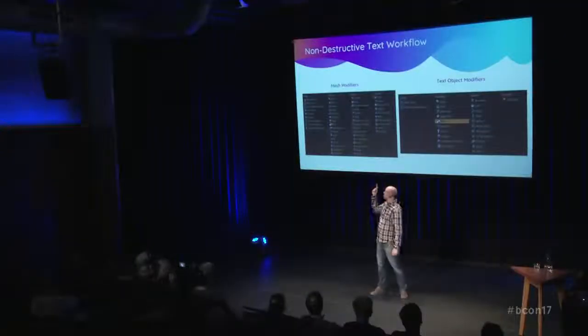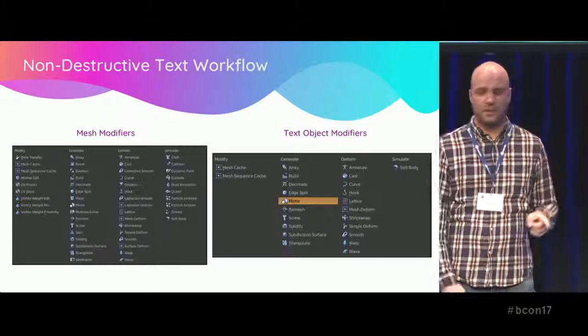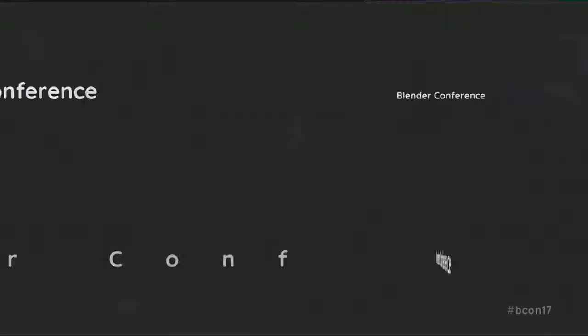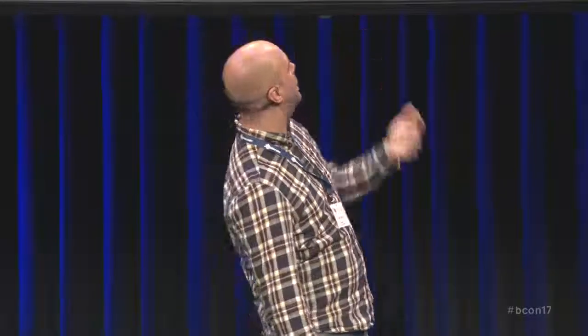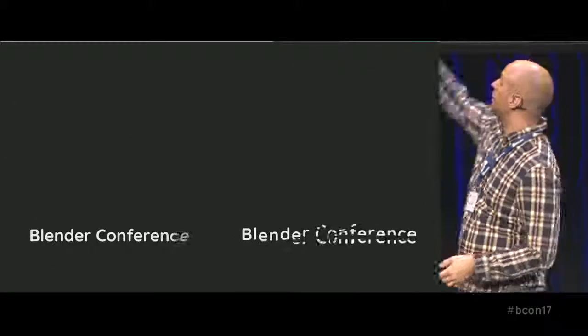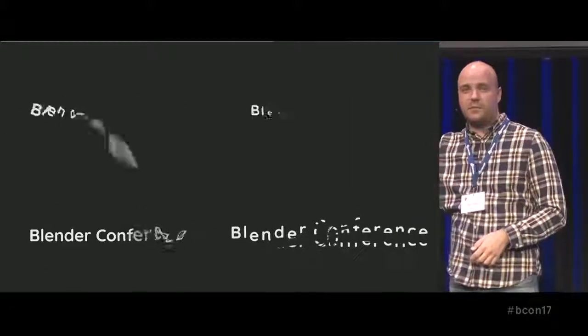On non-destructive text: mesh objects have a full column of modifiers, but text objects have far fewer, and even those don't always work as expected. If you want to reveal text in an interesting way, the only things you can really do are slide it in from the side, scale it up, play with character spacing, or rotate it into view.